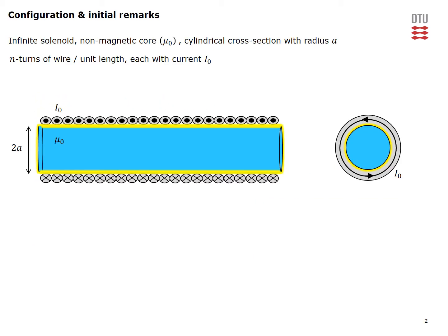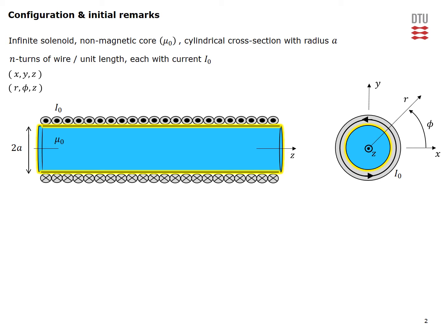Here we have a configuration of the infinite solenoid. We have a non-magnetic core with free space permeability μ₀, and the core itself has a cylindrical cross-section with radius a. A cross-sectional view is shown on the figure to the right. The non-magnetic core is wound with n turns of wire per unit length, and each of the turns carries a current I₀. We introduce the usual rectangular and associated circular cylindrical coordinate systems as shown on the figures.